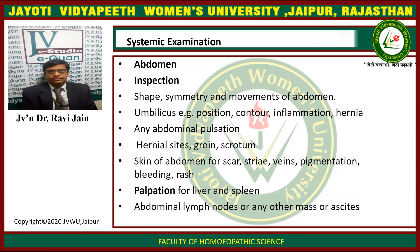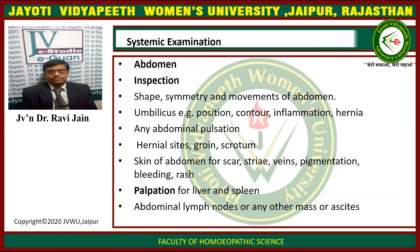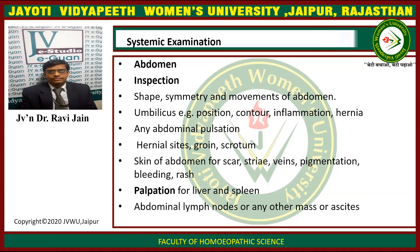In the abdominal examination, this has already been discussed. The steps include inspection, palpation, percussion, and auscultation. In the inspection, we have to check for the shape, movement of the abdomen, check for the umbilicus, its position and contour.